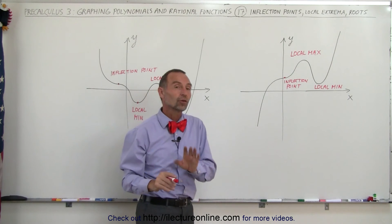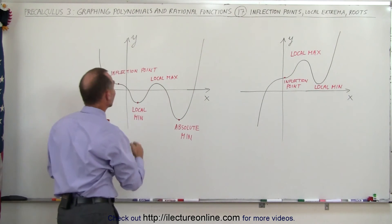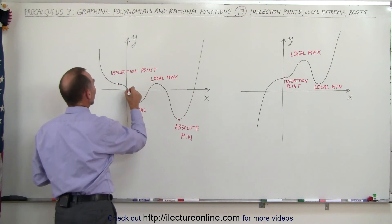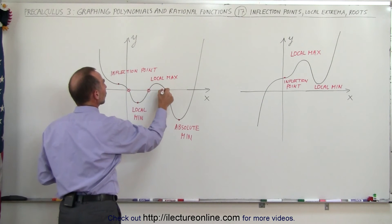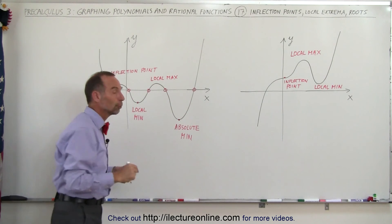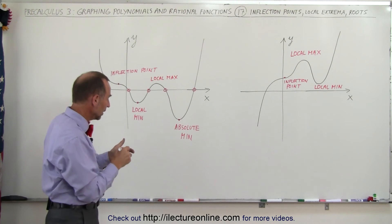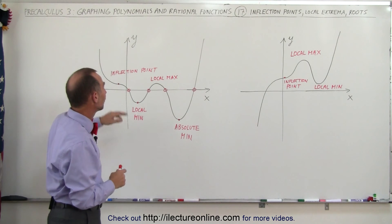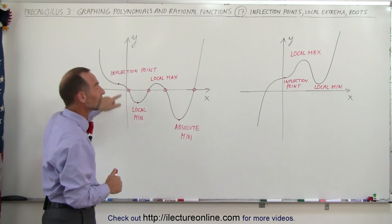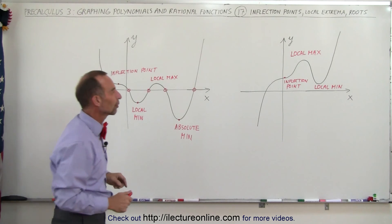As far as roots are concerned, those are the places where the graph crosses the x-axis. So in this case we have one root, two roots, three roots, four roots. So this has four roots, so it's at least at the very minimum a fourth order equation. Although because of the inflection point it must be at least a sixth order equation.